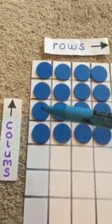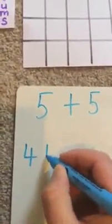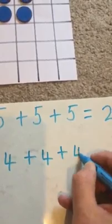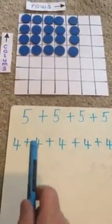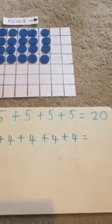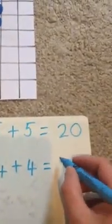Now we've done rows — let's write it another way using columns. How many counters in each column? Let's count: one, two, three, four. There's four in that column — and four in that one, and four in that one. So there are four counters in each column. How many columns are there? One, two, three, four, five. So four counters and five columns. There's four counters in the first column, four in the second, four in the third, four in the fourth column, and four in the fifth column. That's four plus four plus four plus four plus four — and the answer is 20.